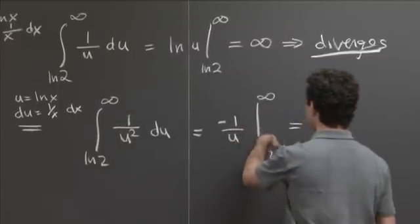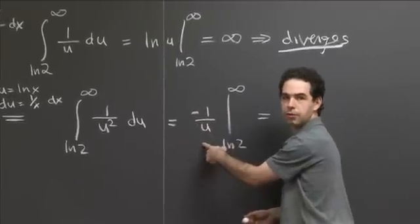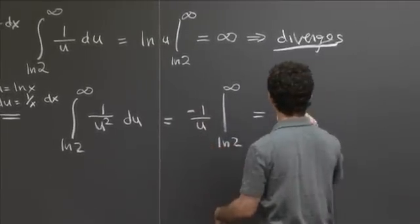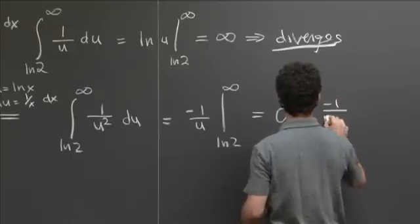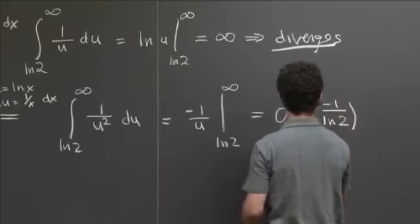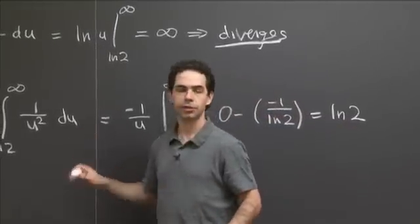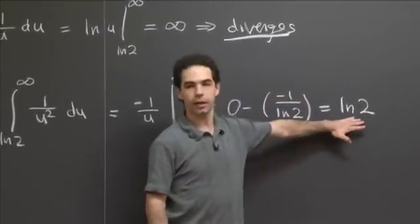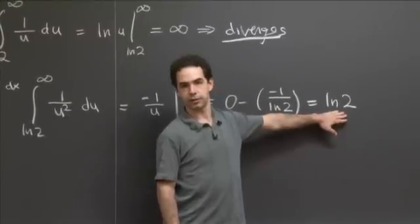OK, so we take the two values here. As u goes to infinity, minus 1 over u goes to 0. So this is 0 minus, and now at the lower bound, it's minus 1 over ln 2. And this is just ln 2. So this integral converges to a nice finite value, ln of 2. So that means the sum converges as well.